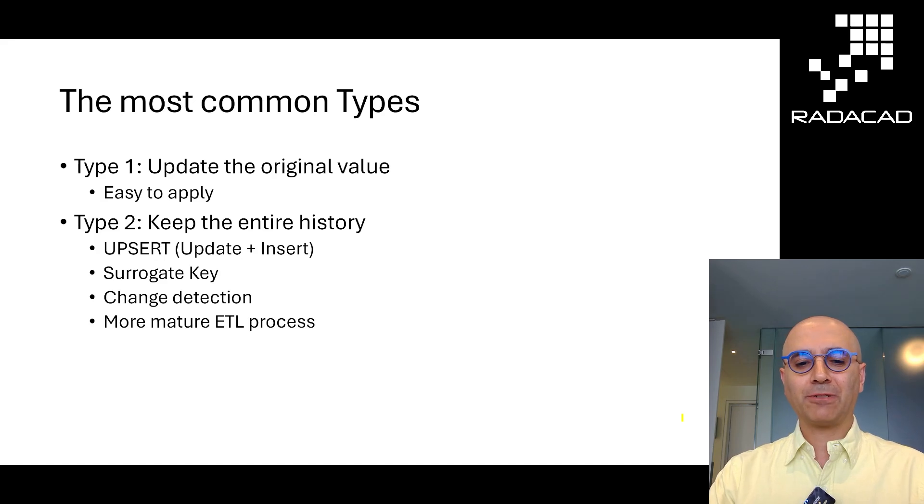So in the next video I'm going to talk about that process and how it works. I hope you enjoyed this video and learned what slowly changing dimension types are. In the next video I'm going to talk about how to do SCD Type 2 as a starting point using Microsoft Fabric and Power BI — how it works, the scripts, and all of those things. If you liked this video, go ahead and subscribe to our YouTube channel. We have weekly videos on Power BI and Microsoft Fabric. Until the next video, bye.